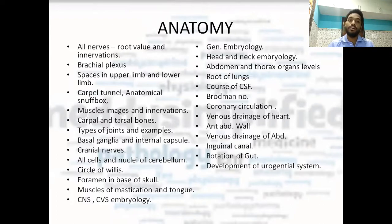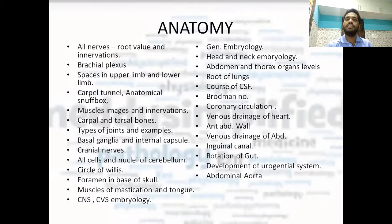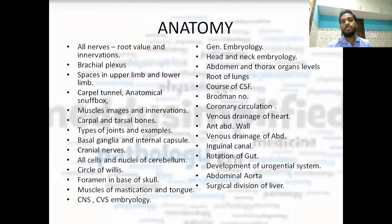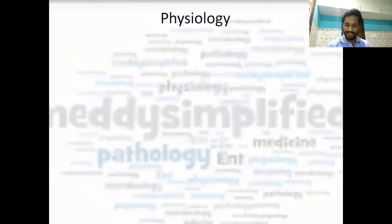And development of the urogenital system is also important from embryology. Abdominal aorta and its branches — a very, very important topic; every year a question is asked on this. Then the surgical anatomy of the perineum, which is also studied in surgery but is taught in anatomy as well.